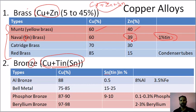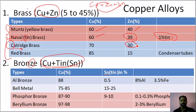If you use 39% zinc, you use admiralty copper with 1% tin and zinc. That is cartridge brass. C is third place in alphabetical order. You use 30% zinc, remaining 70% copper.